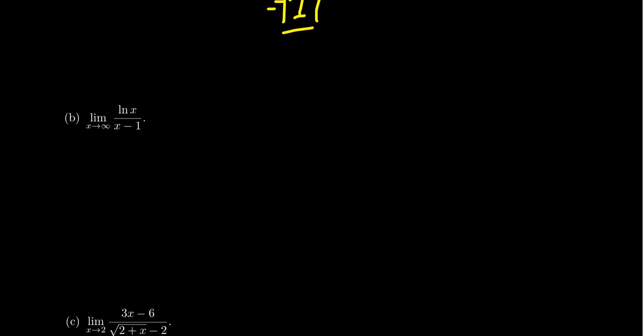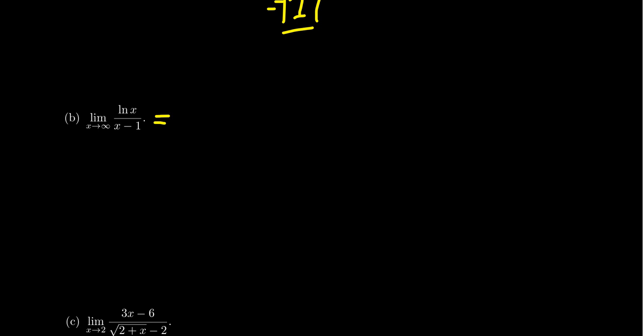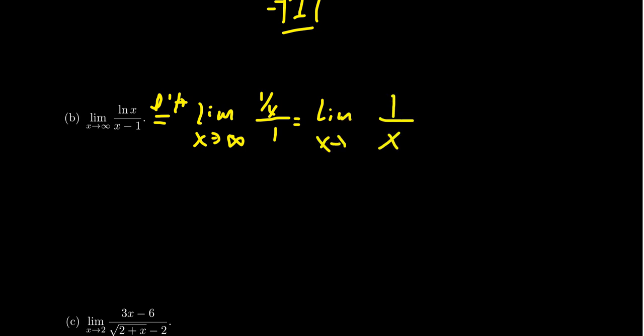Let's look at the limit as x approaches infinity of the natural log of x over x minus 1. We get the natural log of infinity over infinity minus 1, which is infinity over infinity. This is important — L'Hôpital's rule only applies if you have infinity over infinity or 0 over 0, so we must check first. Since we have the indeterminate form, we apply L'Hôpital: derivative of natural log is 1 over x, derivative of x minus 1 is 1, giving 1 over x. As x goes to infinity, 1 over infinity is 0, so the limit is 0.